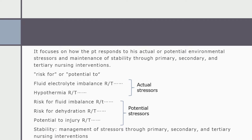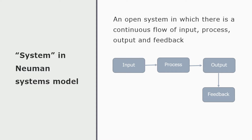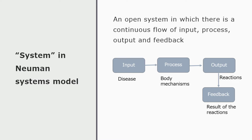Betty Neuman gave her famous model called the Newman Systems Model. According to this model, the system is an open system in which there is a continuous flow of input, process, output, and feedback. When we get a disease, that is the input; whatever body mechanisms occur is the process; our reaction to that is the output; and the feedback is whether we are cured or not, which depends on how we react.